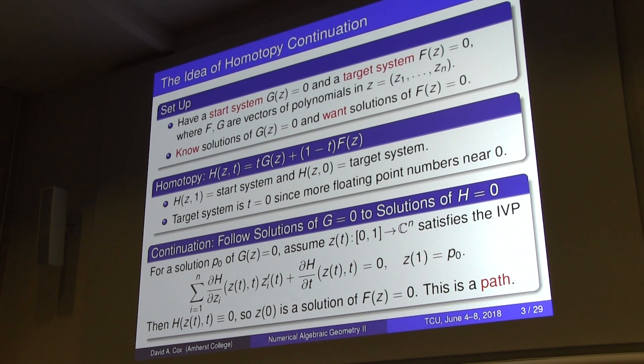At time one I have the start system solution as my initial condition. The partial derivative of the homotopy with respect to t being zero means this quantity is constant. Since it's a solution of the start system at time one, it's equal to zero, and remains zero throughout — so at time zero it's a solution of our target system.